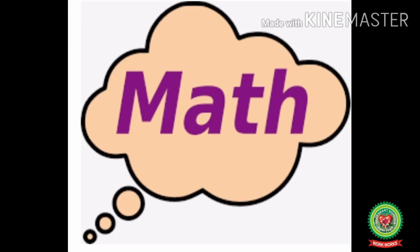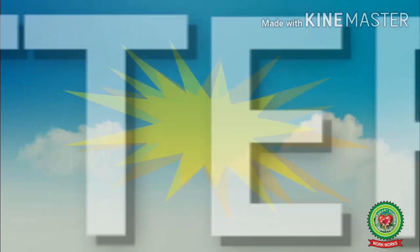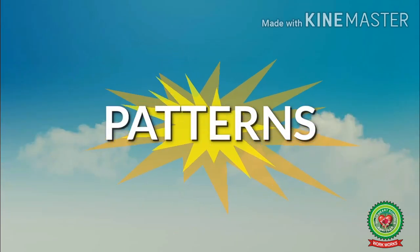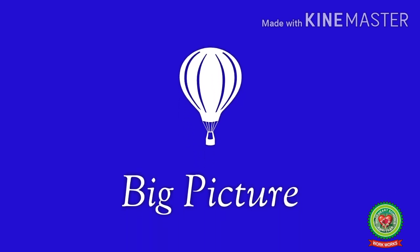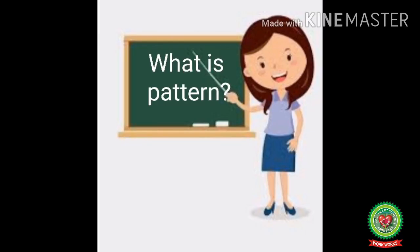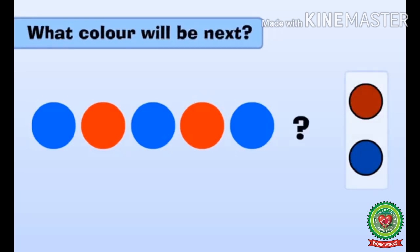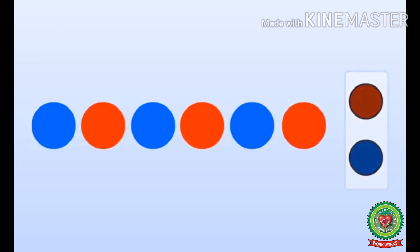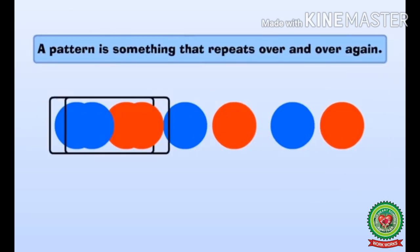Hello kids, welcome to the maths class. Today we will do patterns. The main objective of today's learning is to know what is a pattern and how to complete the pattern. A blue circle, red circle, blue circle, red circle, blue circle — now what color circle will be next? A red circle or a blue circle? Yes, a red circle. So a pattern is something that repeats over and over again.